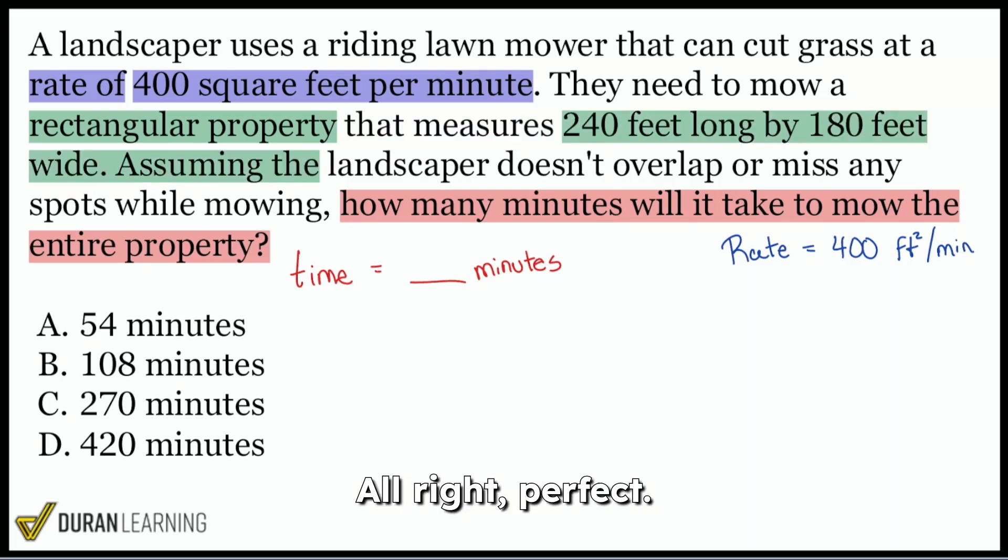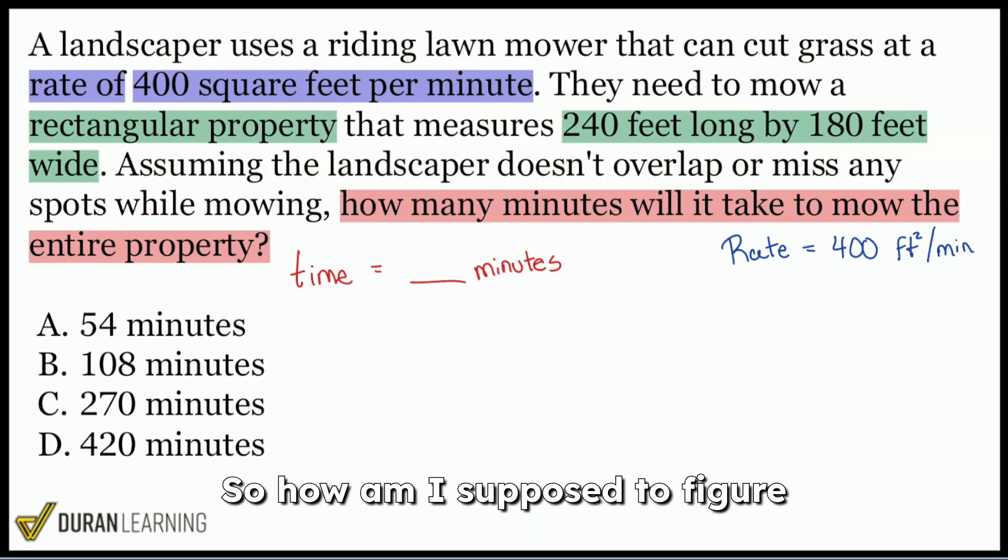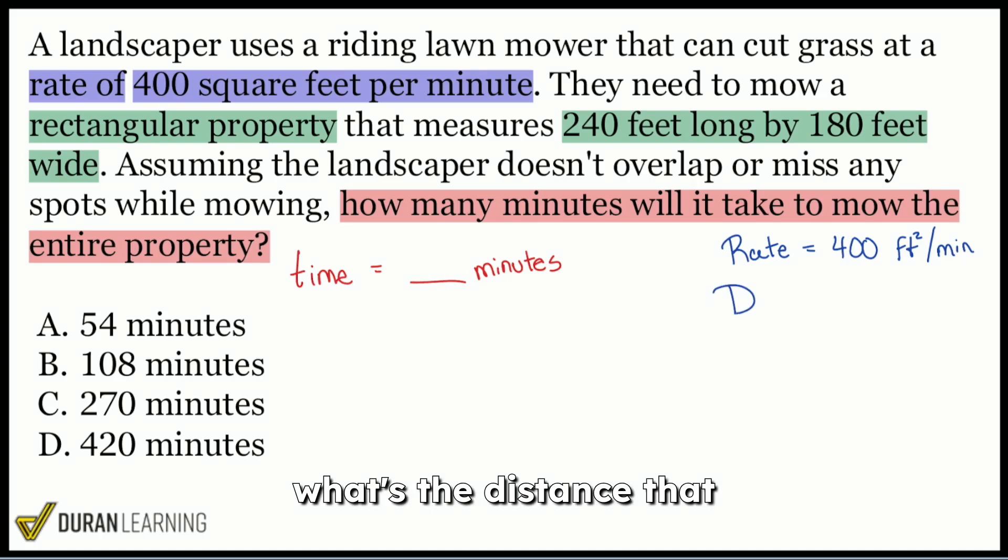All right, perfect. Assuming the landscaper doesn't overlap or miss any spots. So how am I supposed to figure this out? Well, like we said, this is a distance rate and time question. We are looking for time. We have the rate. Well, then the next question is what's the distance that we're covering? What's the distance?